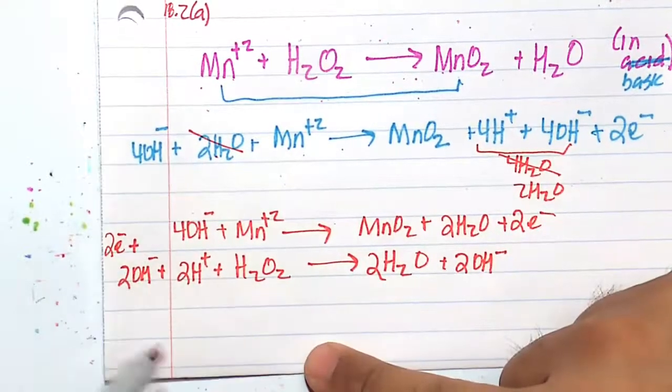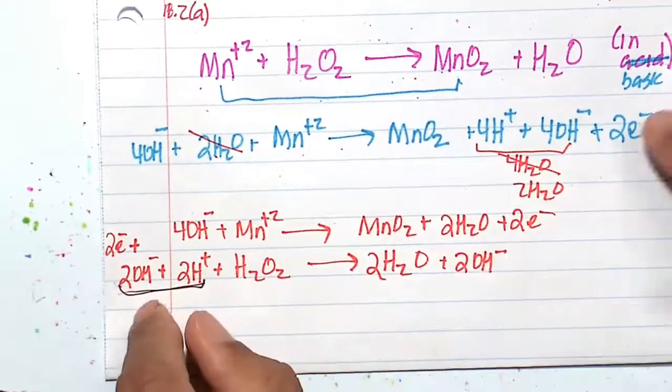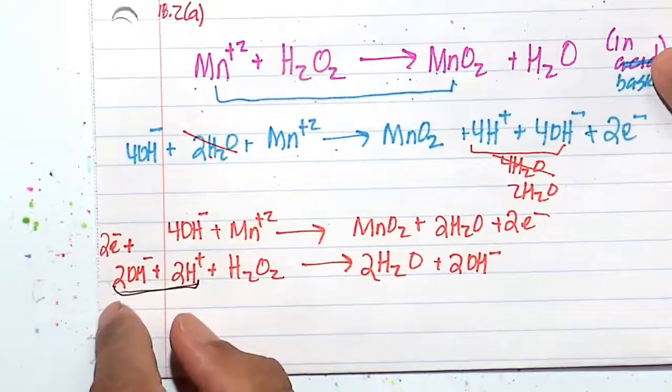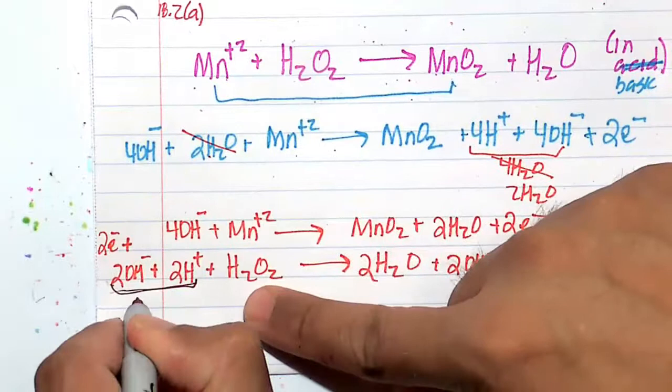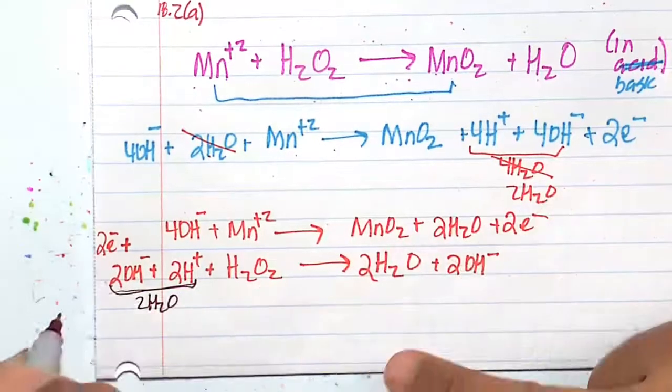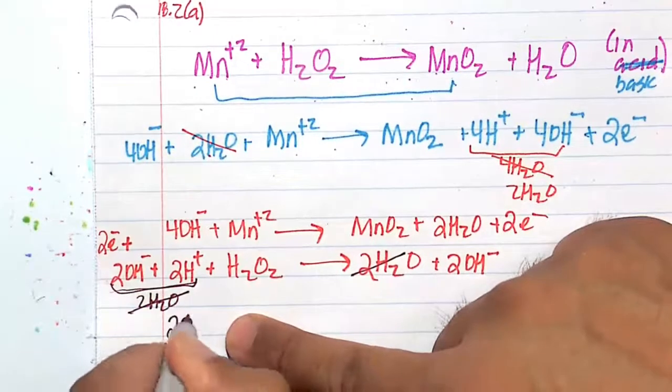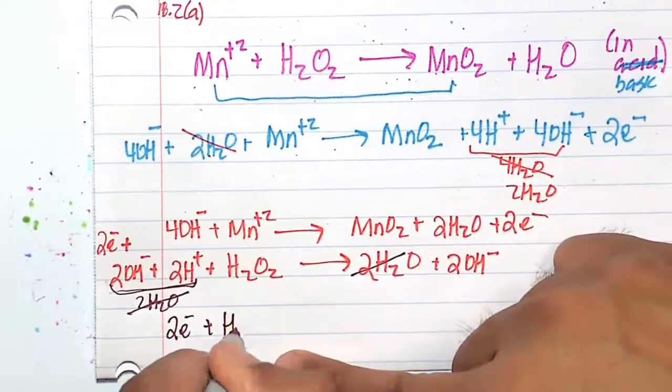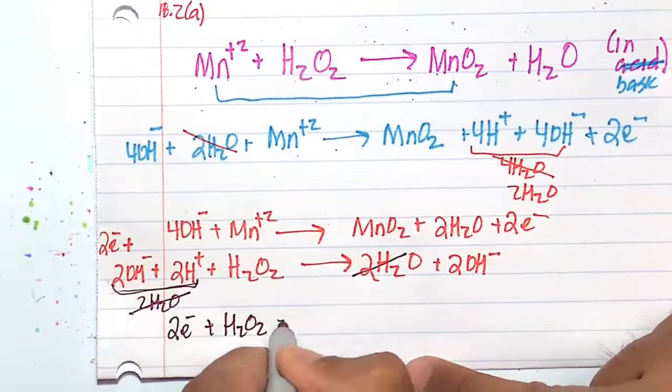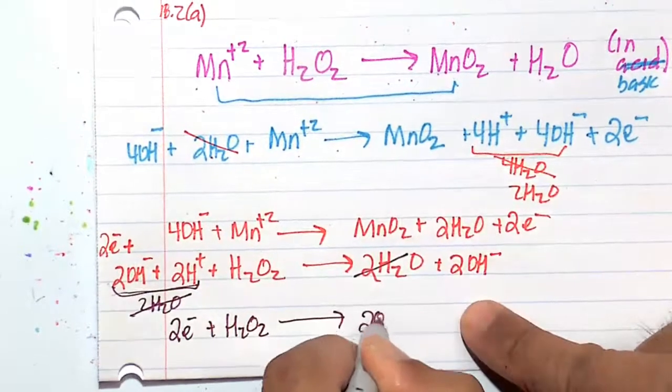So minus 2, this is just water neutralizing the H+ with the base because I have a lot of base around. So this is two waters. The two waters actually cancel out with the two waters over here, leaving me with 2e- plus H2O2. And that's going to go to 2 hydroxide ion.